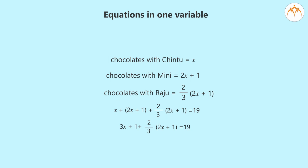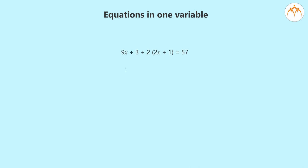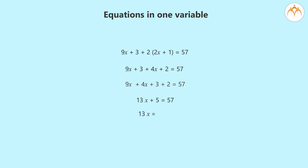If we multiply both sides by 3 we get 9X plus 3 plus 2 into 2X plus 1 equals 57. That means 9X plus 3 plus 4X plus 2 equals 57. Rearranging, 9X plus 4X plus 3 plus 2 equals 57, or 13X plus 5 equals 57. From this we get 13X equals 52.